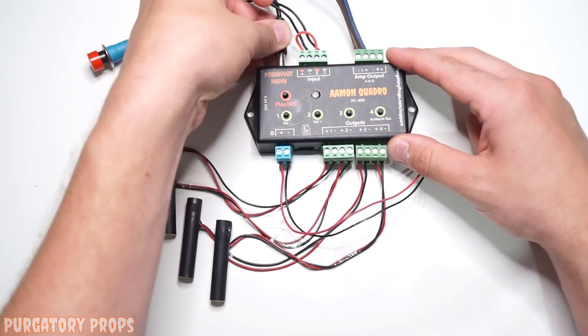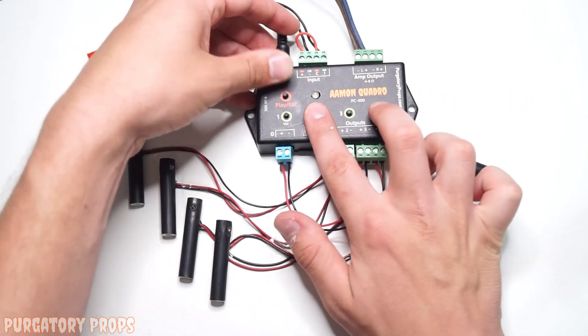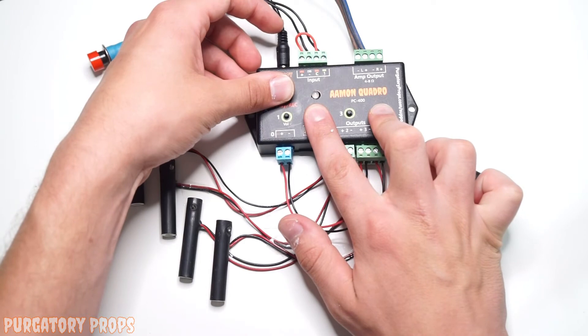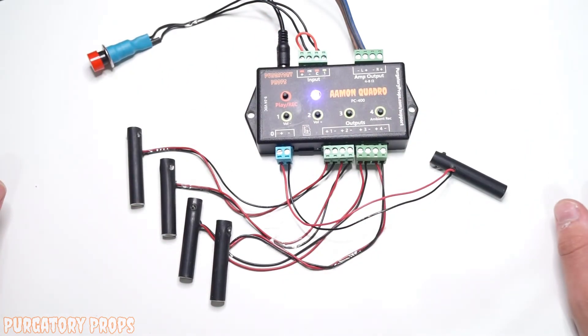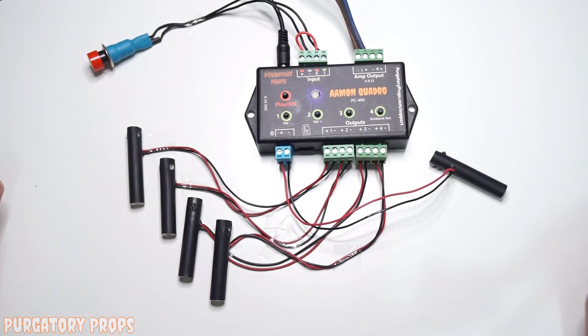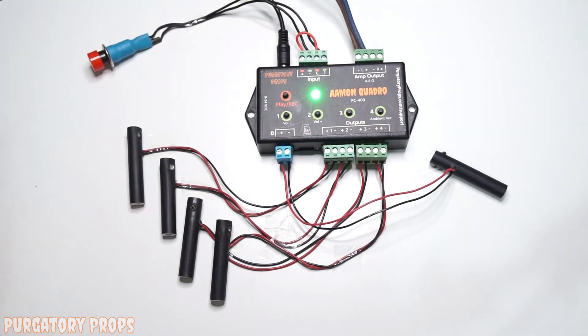For the post delay, same thing, but you're going to hold 2 and 4 and play record. Again, different colored flashing LED, but it is now recording that post delay. Same thing, play record to save that.